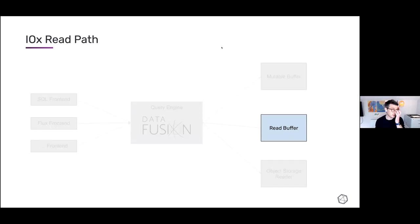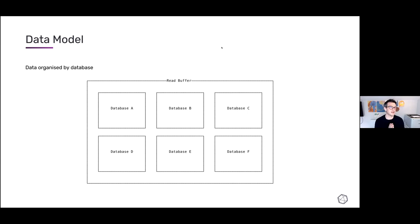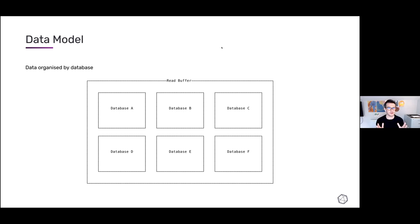I'm only going to focus now on the read buffer, which is just one of these execution engines. Let's look at how data is organized in the read buffer. It's very similar to how data is organized in other parts of IOx, and also quite similar to how data is organized in Parquet. At a high level, we organize things by database — similar to a 1.x database or a 2.0 bucket — and within a database we have partitions.